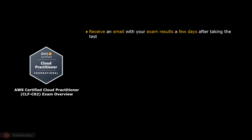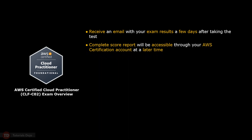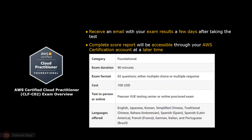You'll receive an email with your exam results a few days after taking the test, and the complete score report will be accessible through your AWS certification account at a later time. The exam costs 100 US dollars and offers the flexibility of being taken either at a nearby testing facility or online from the comfort of your home. The exam can also be taken in various languages to accommodate a broader range of candidates who are more comfortable and proficient in their native or preferred languages.